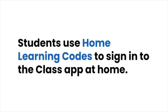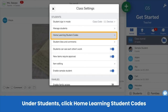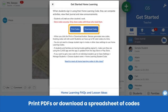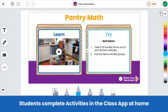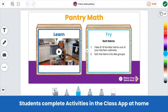Another way to support home-school-world connections is to assign activities for students to complete at home. To complete Seesaw activities at home, students need to sign into the Class App. We recommend students use home learning codes to sign in at home, no matter how they sign in at school, because home learning codes are unique to each student and protect privacy by preventing students from seeing each other's work. On a computer, go to the student section in class settings and click home learning student codes. Print PDFs or download a spreadsheet of codes and share them with students. Students can simply scan or enter their home learning code. Then assign activities that leverage family relationships and the home environment. Students complete them exactly how they would complete activities in class. Effective home activities reinforce skills at students' independent levels, involve families or community members, and leverage the home environment.